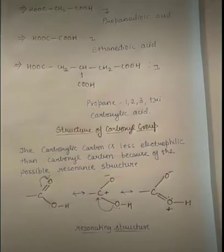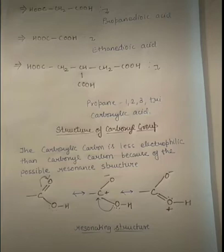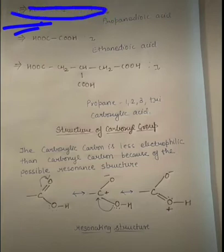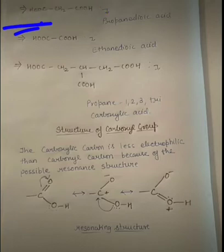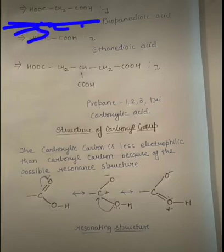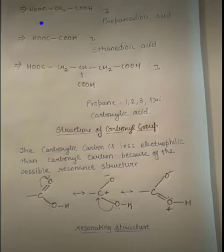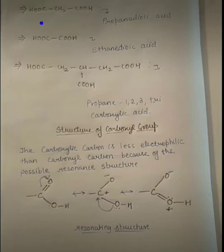Now let us see examples when there are more than one carboxylic group. For a compound with two carboxylic groups on a three-carbon chain: the parent chain is propane, and since there are two carboxylic groups, we write 'di' before 'oic acid' — so it is named propanedioic acid. For a two-carbon compound with two carboxylic groups, we count two carbon atoms, name it ethane, add 'di' and 'oic acid' — giving ethanedioic acid.